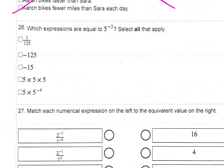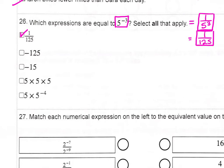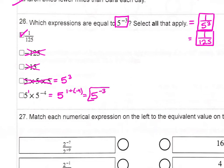Number 26: which expressions are equal to 5 to the negative 3rd power? That's the same as 1 over 5 to the positive 3rd power, or 1 over 125. The first choice — 1 over 125 — matches. The last choice, 5 times 5 to the negative 4th power: the 5 has an invisible exponent of 1, so we keep the base and add the exponents to get 5 to the negative 3rd power — that also matches.